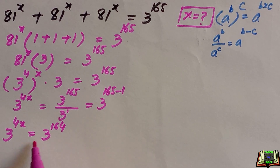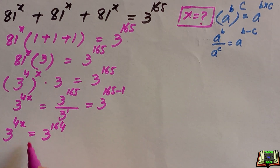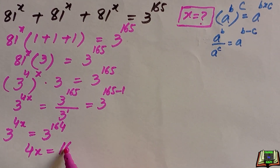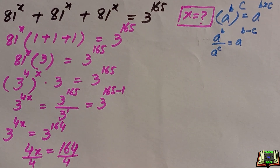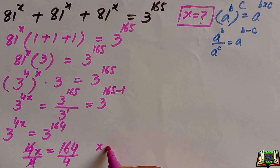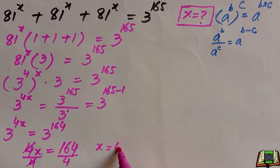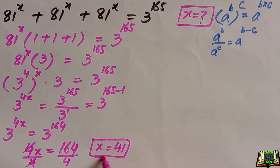Since the bases are the same, we can equate the powers. So 4x equals 164. Dividing both sides by 4, the 4s cancel, giving us x equals 41. This is the final answer.